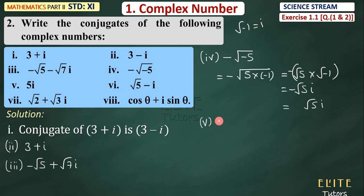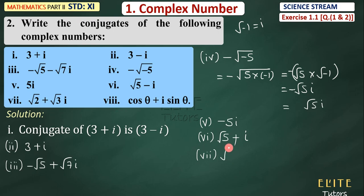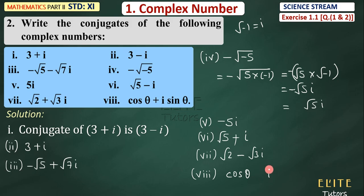The conjugate of 5i is −5i. The sixth question: real part √5, minus imaginary part i — the conjugate will be plus, so the sign changes. The seventh question: √2 + √3 i — real part stays, imaginary part changes to minus. The eighth question involves a trigonometric form: cos θ + i · sin θ. Here i is the imaginary part, and in the conjugate you change the imaginary part, so it becomes cos θ − i · sin θ.